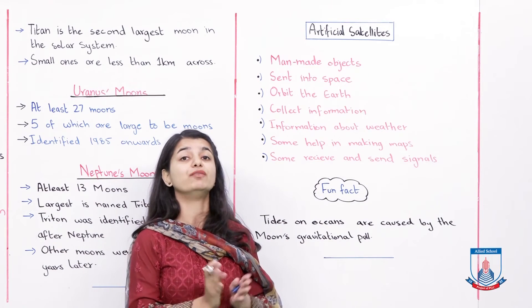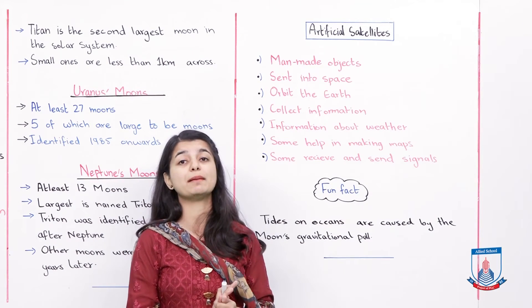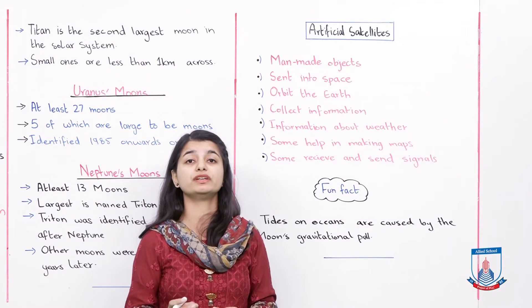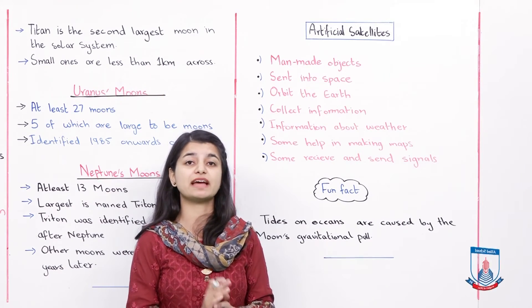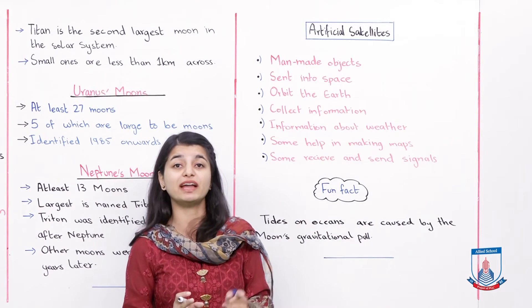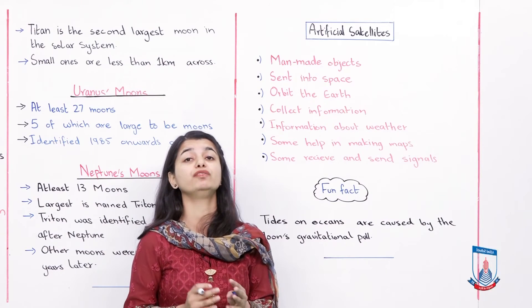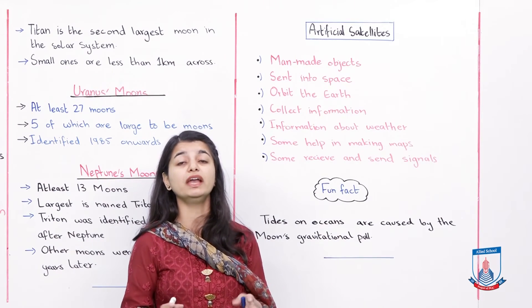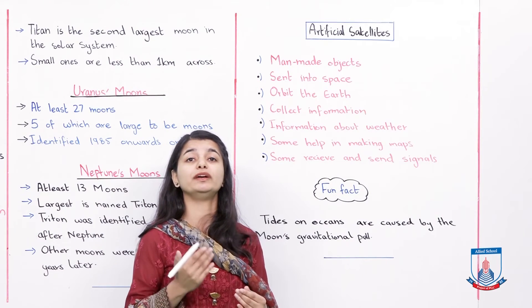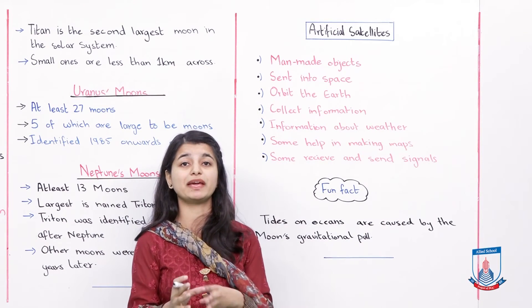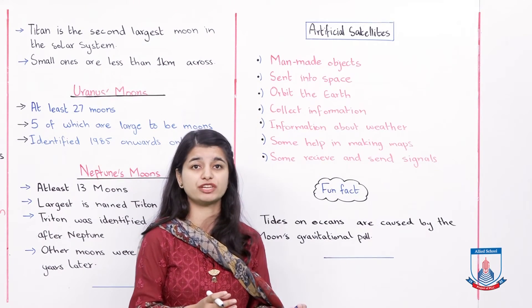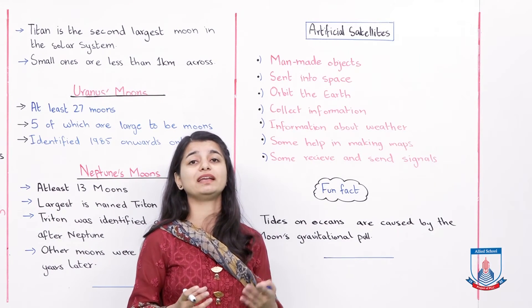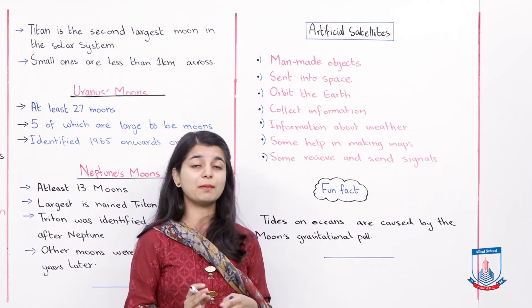Ab inka jo kaam hai woh kya hai? Information collect karna. The things that a satellite gathers information about include the weather. Kai satellites hoti hain jo weather ke liye specifically designed hoti hain — woh aapko batati hain ki mausam kaisa aa raha hai, kis area mein wind aa rahi hai, kahaan se rain aa rahi hai. Aur isi wajah se aapke paas weather forecast aata hai — agle hafte baarish hogi, agle hafte garmi hogi. Satellite jo weather ko predict karti hain woh batati hain ki surrounding areas mein precipitation zaroor hogi.